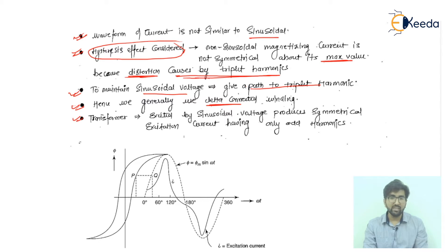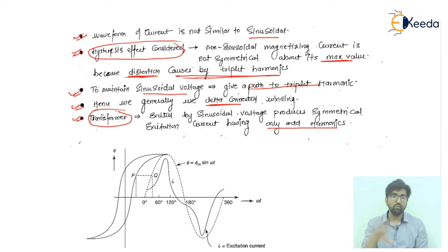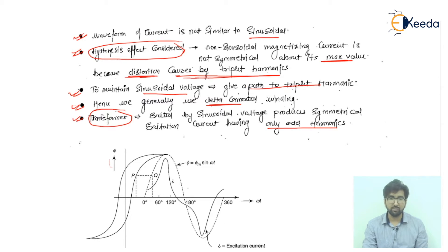A transformer excited by a sinusoidal voltage produces a symmetrical excitation current having only odd-order harmonics. The simplest BH curve is shown here, and accordingly the excitation current curve is also provided.